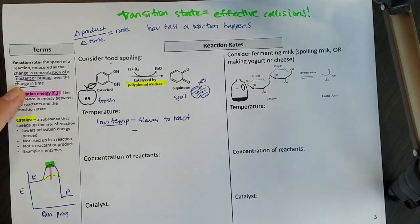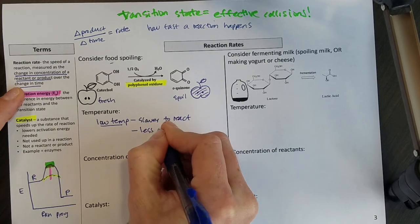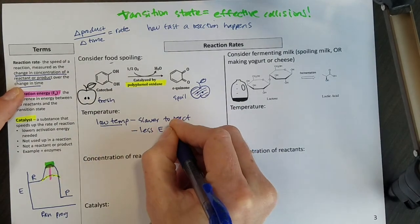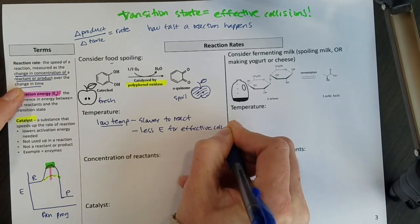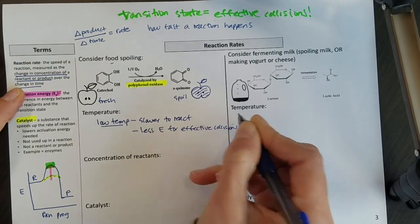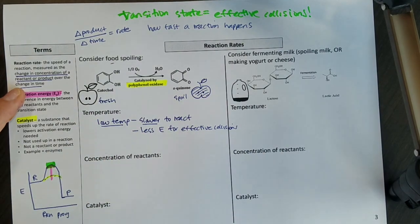I can put that in terms of energy and collisions. I could say I have less energy for effective collisions. And so low temperatures give me these slow reaction rates.